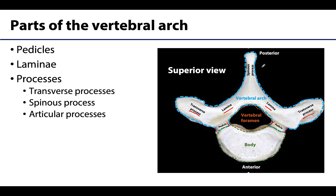There'll be one posteriorly projecting spinous process, which is located close to the midline — if you palpate along the midline of your back you're feeling those spinous processes. Additionally there will be four articular processes: two superior, which you can see here, and two inferior. Each will bear an articular facet for articulation with the neighboring vertebra's articular facet.